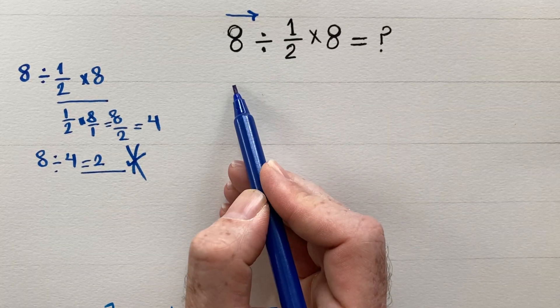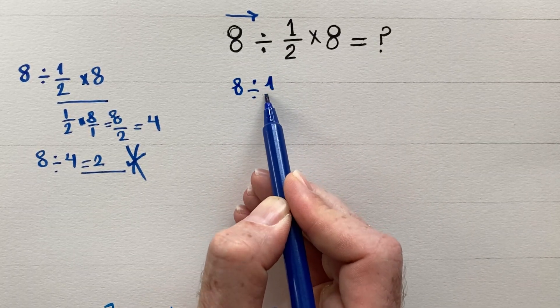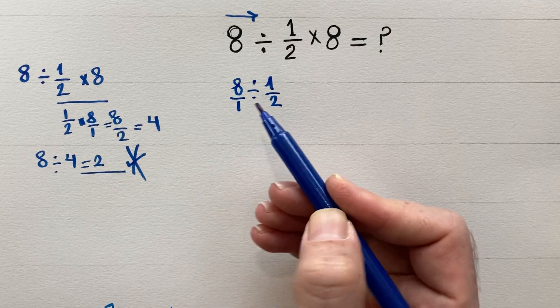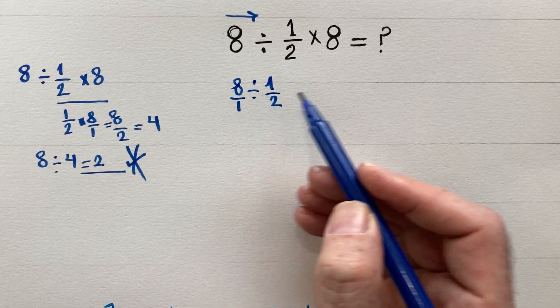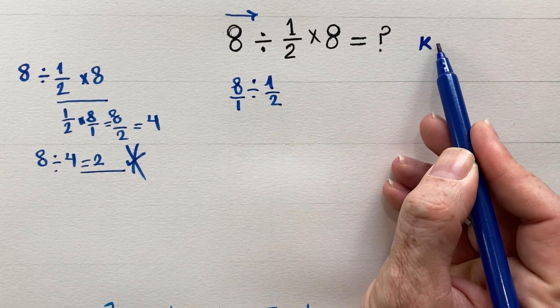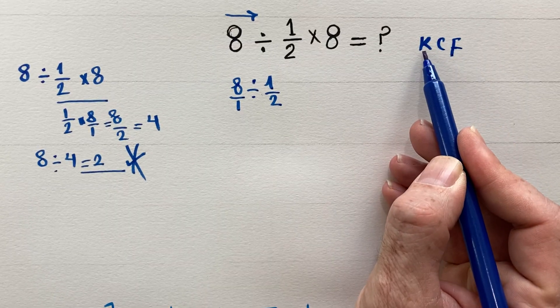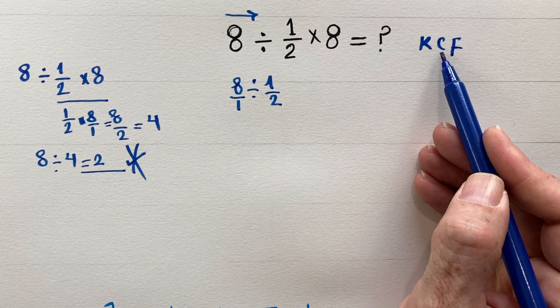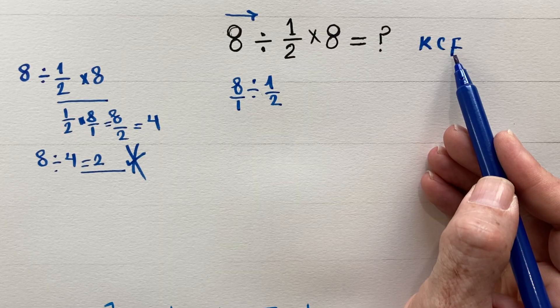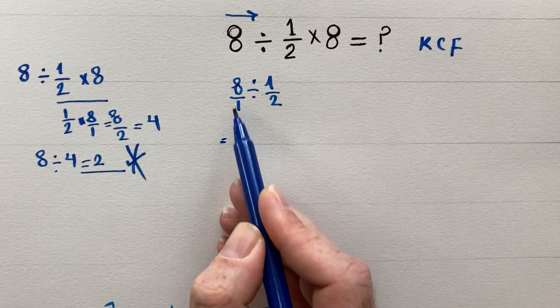8 divided by 1/2. 8 is 8/1. Division of two fractions we need to follow KCF. K stands for keep, C stands for change, F stands for flip. What does it mean? Keep